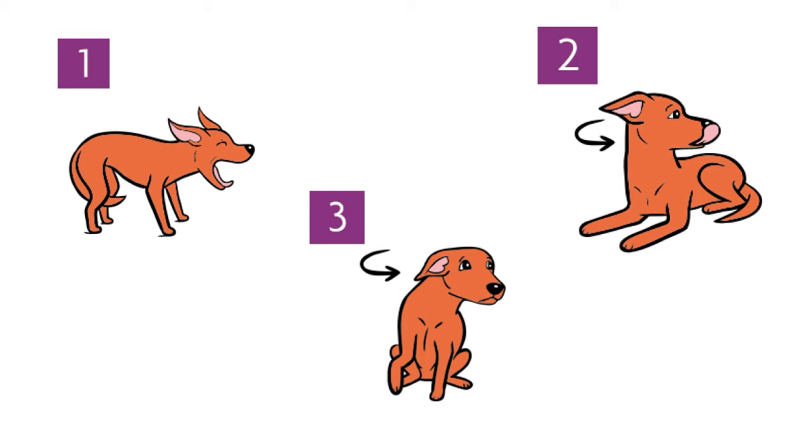This is also seen a lot in resource guarding behaviors when the dog orients their body towards the object that they want to keep but directs their vision to the perceived threat, which is usually the person trying to take the item away from the dog. In this situation we should not be doing that and giving the dog space.